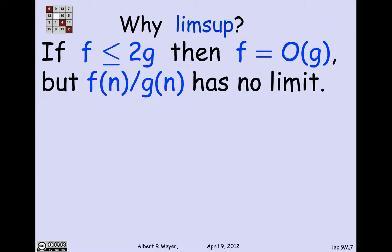Here's what limsup does for us. Suppose I have a function f that's less than or equal to 2g, which means that surely f is big O of g, according to the previous definition, because you amplify g by 2 and you get above f. The problem is that f of n over g of n may have no limit. So I can't simply say that f is O of g, because the limit of f over g is finite. Let's see how that could happen.